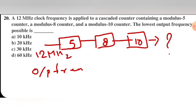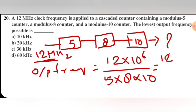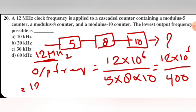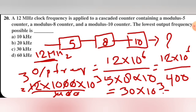The output frequency equals input frequency divided by the product of all mods. So output frequency equals 12 × 10⁶ divided by 5 × 8 × 10, which equals 12 × 10⁶ divided by 400. Simplifying: 12 × 100 × 10³ divided by 400 equals 3 × 10³ multiplied by 10 equals 30 × 10³, which is 30 kilohertz. The right option is C.